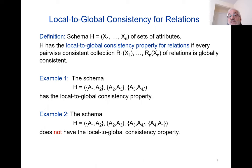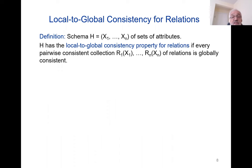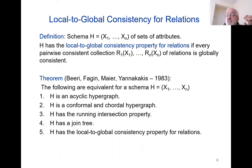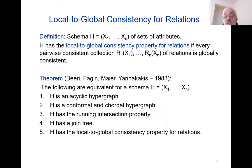The first intuition is that one has no cycles while the second has a cycle — and in fact this is the right intuition. There is a very well-known and extensively cited paper — almost 1,000 citations, 999 to be exact — from the 80s by Beeri, Fagin, Maier, and Yannakakis, that says: if I take a schema H and view it as a hypergraph with hyperedges being the sets of attributes, then the following five statements are equivalent: H is an acyclic hypergraph; H is conformal and chordal; H has the running intersection property; H has a join tree; H has the local-to-global consistency property for relations.